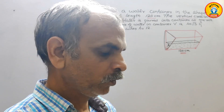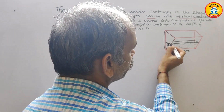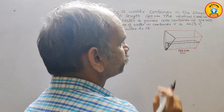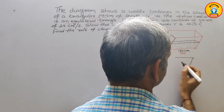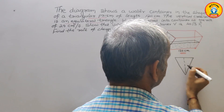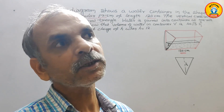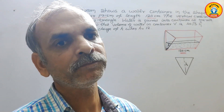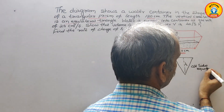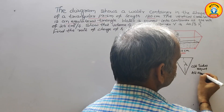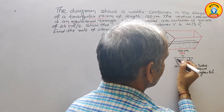We will start with proving the volume formula. If the container cross-section is an equilateral triangle, the water surface also forms an equilateral triangle. This is your h. In an equilateral triangle, all sides are equal and every angle is 60°. So this angle is 60°, this angle is 60°, and this angle is 60°.